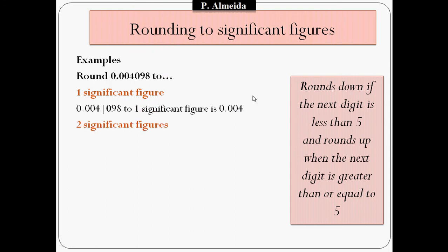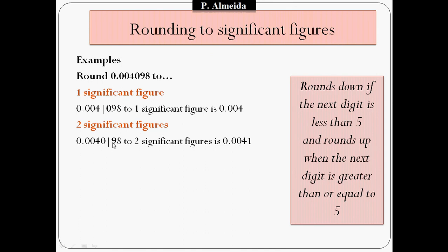Now imagine rounding 0.004098 to two significant figures. Two significant figures would be 0.0040, and then the next digit is 9, which is greater than 5. So I round up to get 0.0041. This number goes up because 9 is greater than 5, and I am still showing two significant figures.